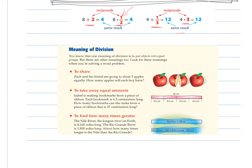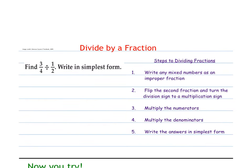Why this makes sense. So the meaning of division, you know that one meaning of division is to put objects into equal groups. So look for the meanings as we go. So equal groups or it's also to share. Zach and his friends are going to share three apples equally. Taking away equal amounts. So Isabelle is making bookmarks for a piece of ribbon. Each bookmark is six and a half centimeters long. How many bookmarks can she make from a ribbon? To share. Putting objects into equal groups. And lastly to find how many times greater. So notice word problems are allowing us to see the different meanings for division or how they will be worded. So make sure that you are thinking about word problems and you read them more than once to help you.